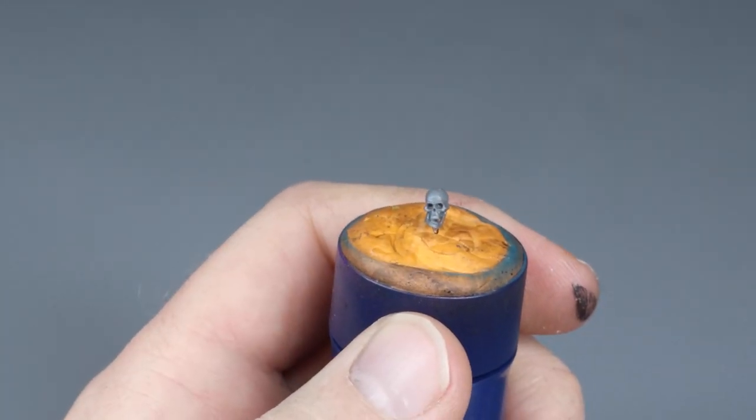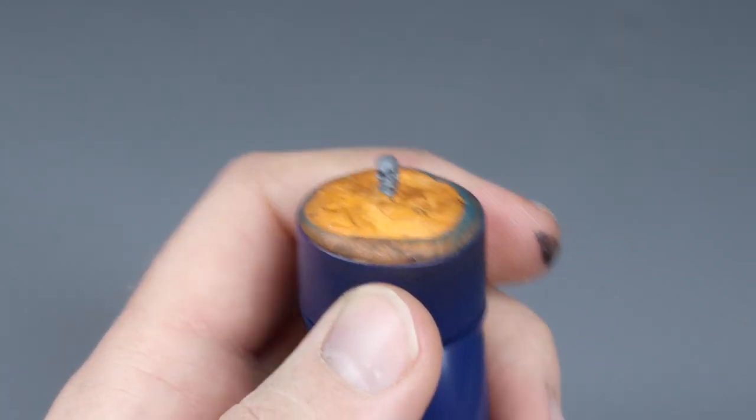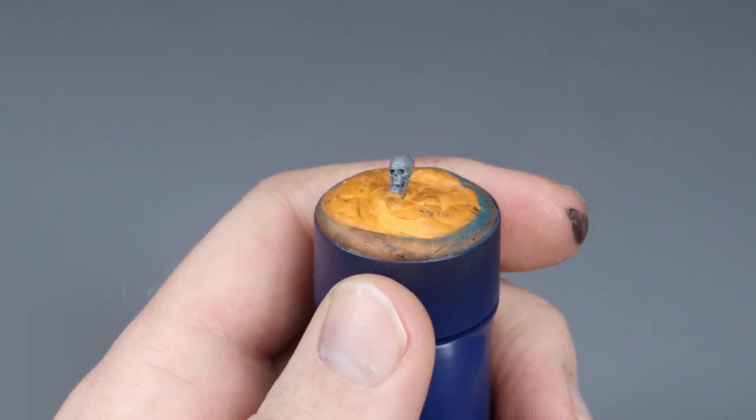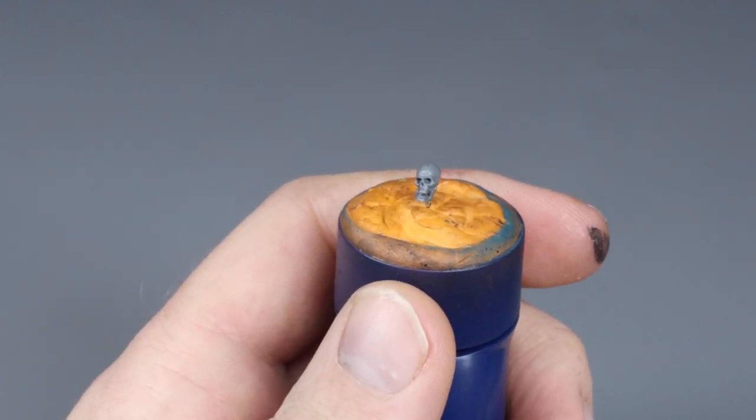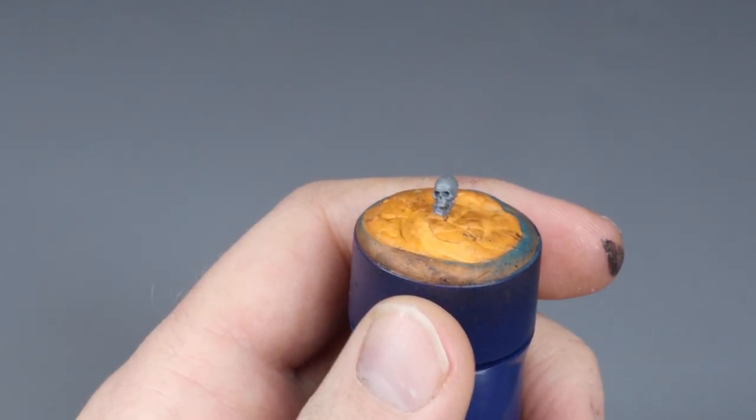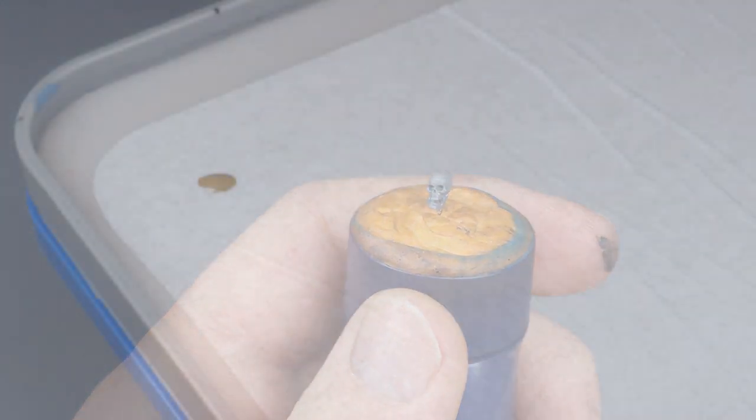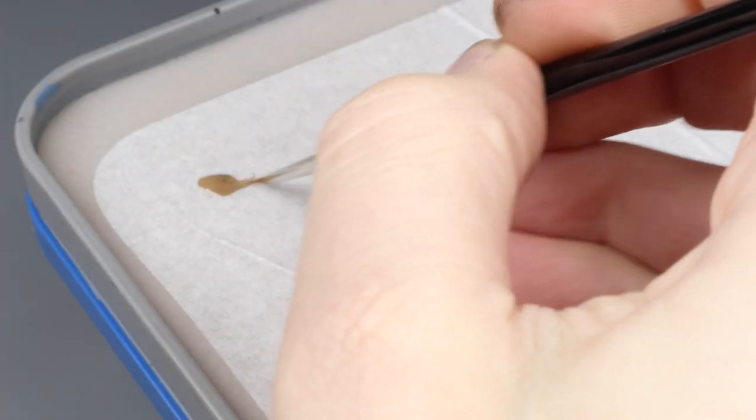When layering without using washes, we need to make sure we have enough contrast to give the final skull enough value to properly emphasize the three-dimensionality of the skull. In the first step, I'm starting by applying Steel Legion Drab to the whole skull as a base coat.